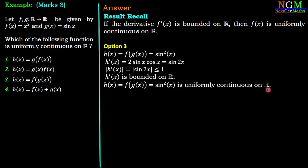Now we'll check option number four which is h(x) = f(x) + g(x) that means x² + sin x. So h'(x) = 2x + cos x.